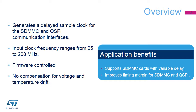A wide input clock frequency range from 25 up to 208 MHz is supported. The delay on the output clock is controlled by the firmware, and may require retuning due to voltage or temperature drift. Applications benefit from being able to support SDMMC UHS-I cards having variable delay, and easier integration of the high-speed SDMMC and QSPI interfaces.